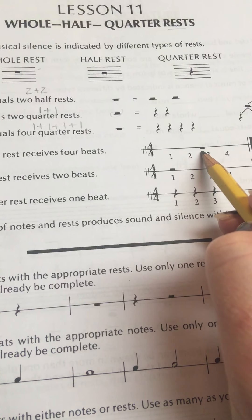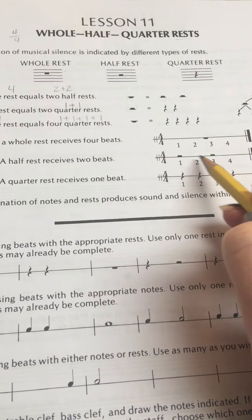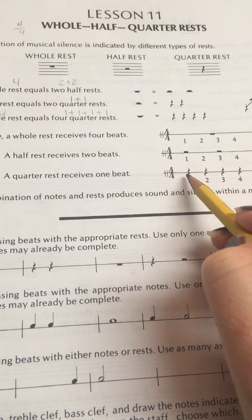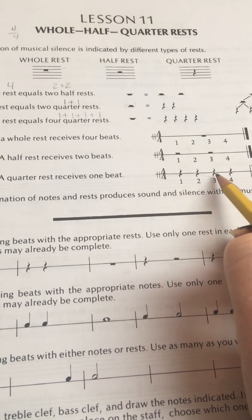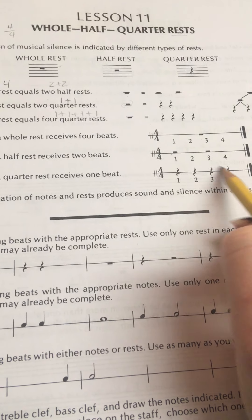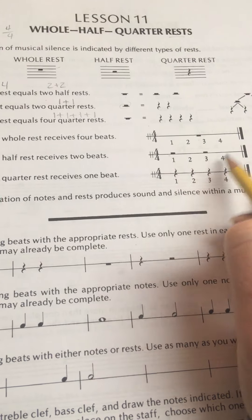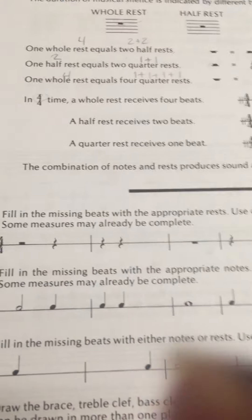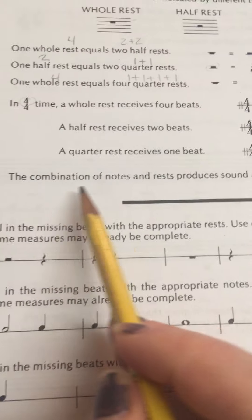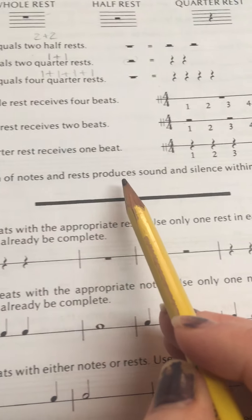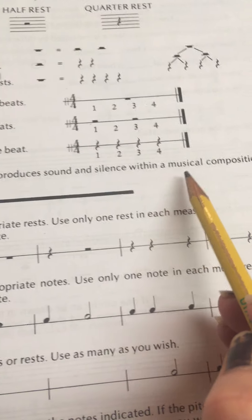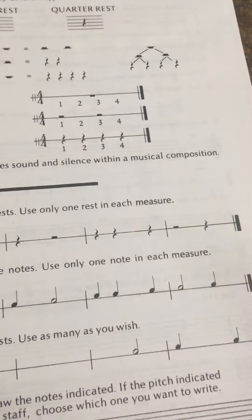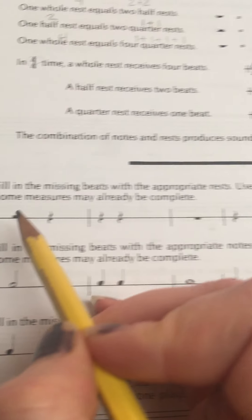One, two, three, four. Half rests receive two beats each. Quarter rests are one beat apiece, so each measure should have four beats in it. The combination of notes and rests produces sound and silence within a musical composition.